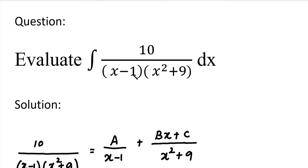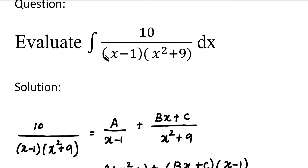Consider 10 divided by (x minus 1) into (x squared plus 9). If we apply the partial fraction method, we need to factorize the denominator. So we apply the partial fraction method. Our denominator has two factors.